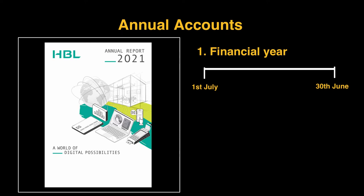So currently this could be 1st July 2022, and when the year ends this would be 2023. The 12 months between those two dates is what you call a financial year, and that's usually the information contained within any annual accounts.